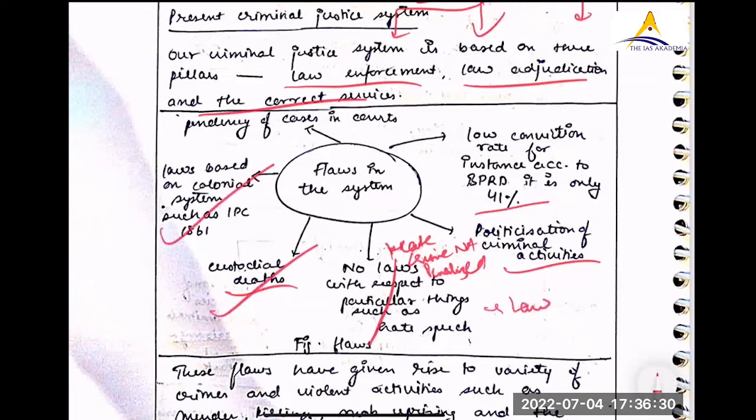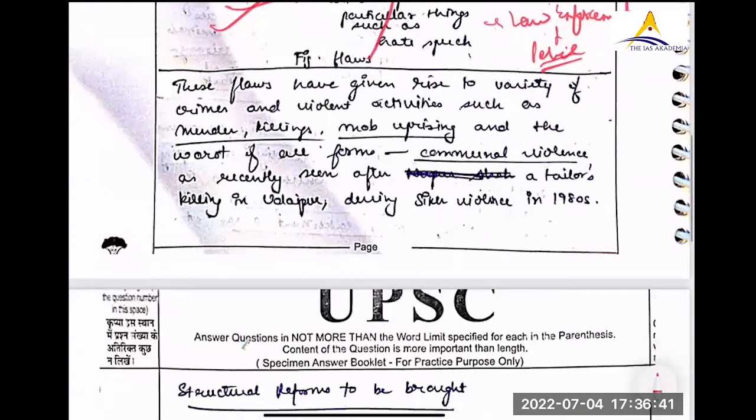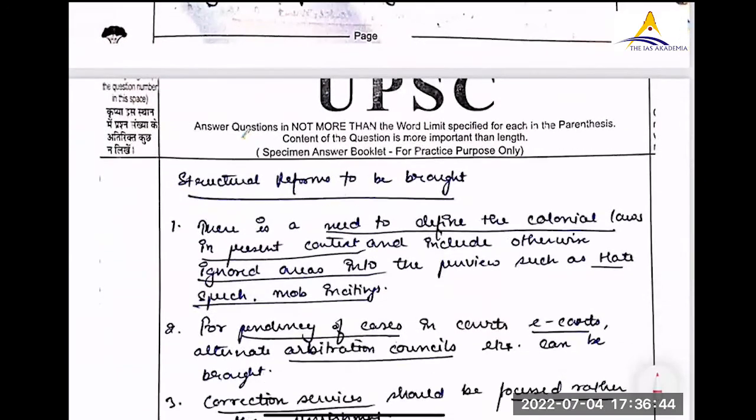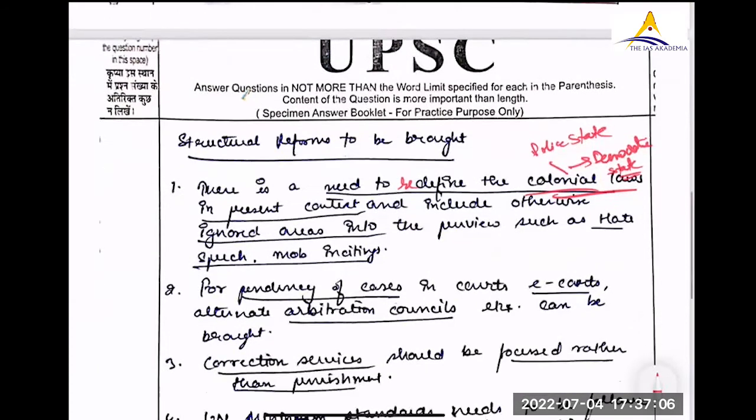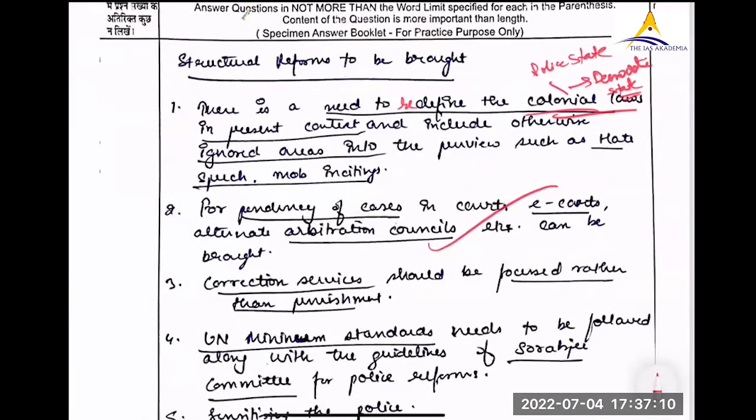So just write. Hate speech is not criminalized. In the answer, the important word should be written first. Custodial death fine. IPC. These are all problems with law adjudication. Sorry law enforcement. Police. Is there only problem with police? Structural reforms to be brought. There is need to redefine. We have already colonial laws. There is need to redefine.